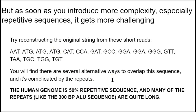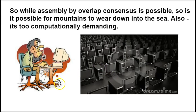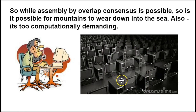When you take that data and try to put it back together using overlap consensus, you can do it, but it's going to take a long time. While in theory and in practice overlap consensus will work — it is how we generated the first human genome and most large genomes sequenced early in the genomics era — it's a very slow process and also very computationally demanding. Computational demand is a big challenge these days given the explosion of big data, and we need approaches that don't demand quite as much computational resource.